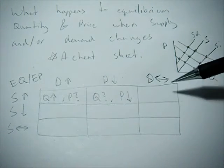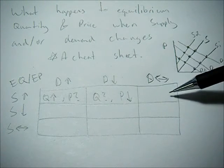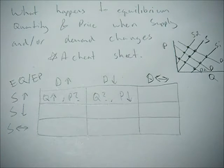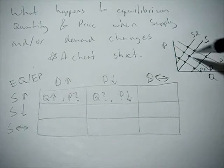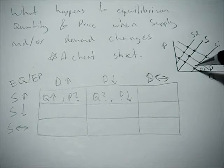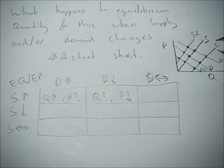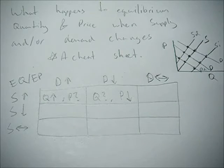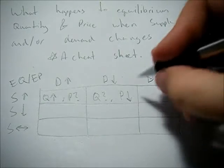Now what happens if demand doesn't change but supply increases? Demand stays on our original demand curve and supply increases. We're going to see equilibrium quantity increase and equilibrium price go down.